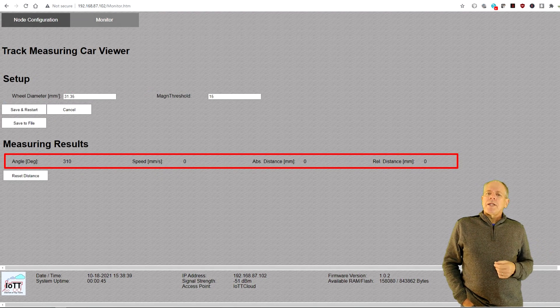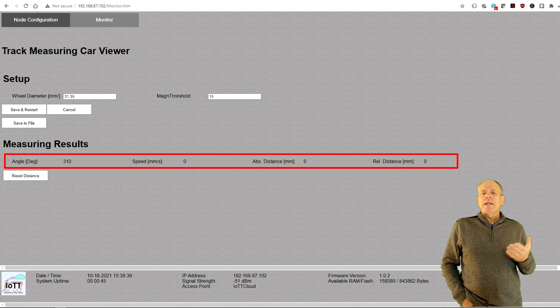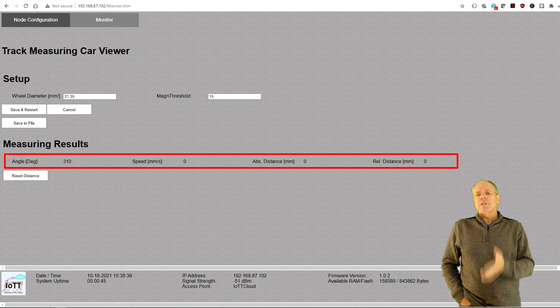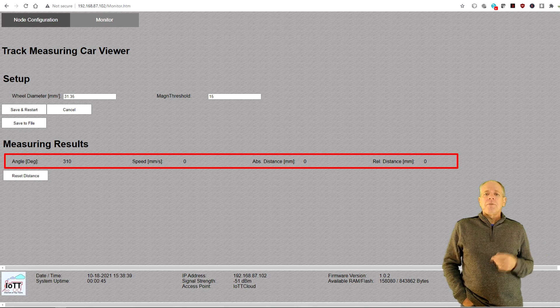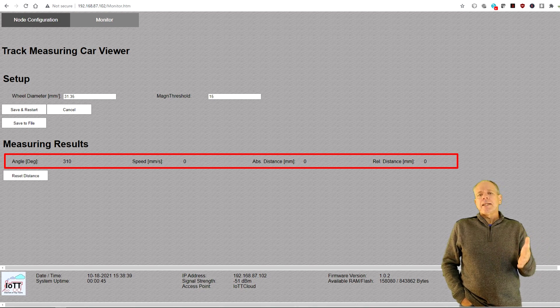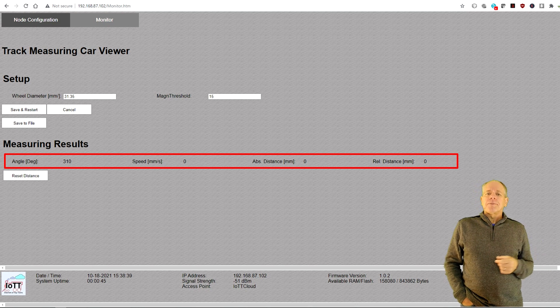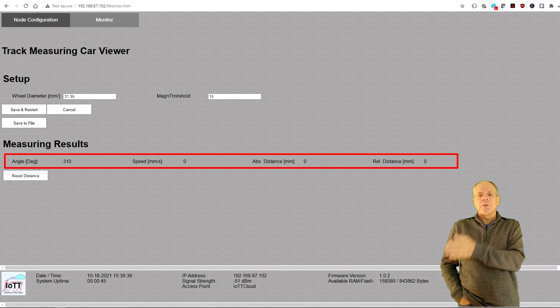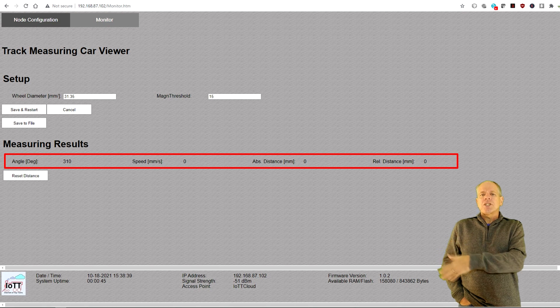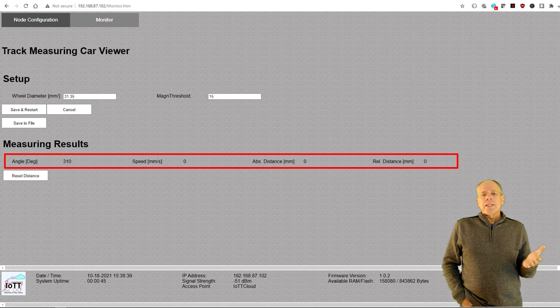When opening the monitor page, we see four data elements that are updated once per second: the current angle of the axle, the current speed of the car, the absolute and relative travel distance. Absolute means the travel distance is always added independent of the travel direction. Relative on the other hand means that the distance is added in one direction and subtracted in the other. So if the car travels from point A to point B, then reverses direction and travels back to point A, the absolute distance should be twice the distance from A to B, while the relative distance should be back to zero.